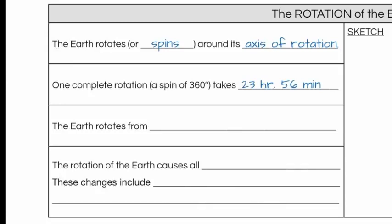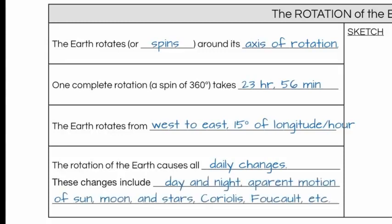Now if you were to look at the earth from the side, at the equator, it rotates from west to east, and it spins at a rate of 15 degrees of longitude per hour. That is 360 degrees divided by 24 hours, giving you 15 degrees per hour. Now while the revolution caused yearly changes, rotation causes daily changes. These are things like the sun rising and setting each day, the stars appearing to move across the sky, and a variety of other things, including day and night, the apparent motion of the sun, moon, and stars, something called the Coriolis effect, and Foucault's pendulum, both of which we'll discuss more in class.